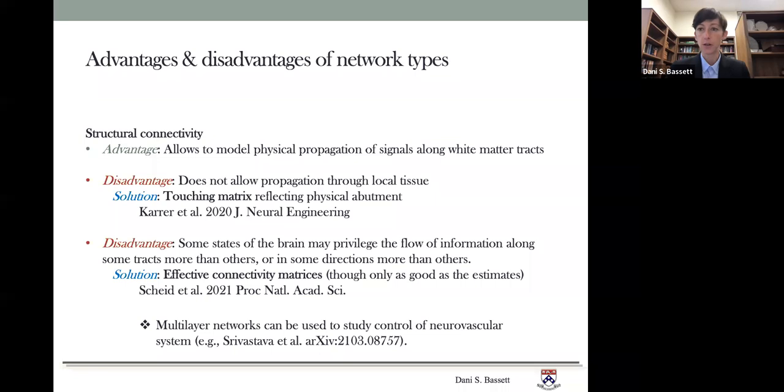A second disadvantage of structural connectivity is that some states of the brain may privilege the flow of information along some tracks more than others or in some directions more than others. And a solution to this disadvantage is to instead use effective connectivity matrices rather than structural connectivity. Though, of course, acknowledging that those effective connectivity matrices will only be as useful as they are well estimated. This is something that we have done recently in Scheid et al 2021 in the proceedings of the National Academy of Sciences.